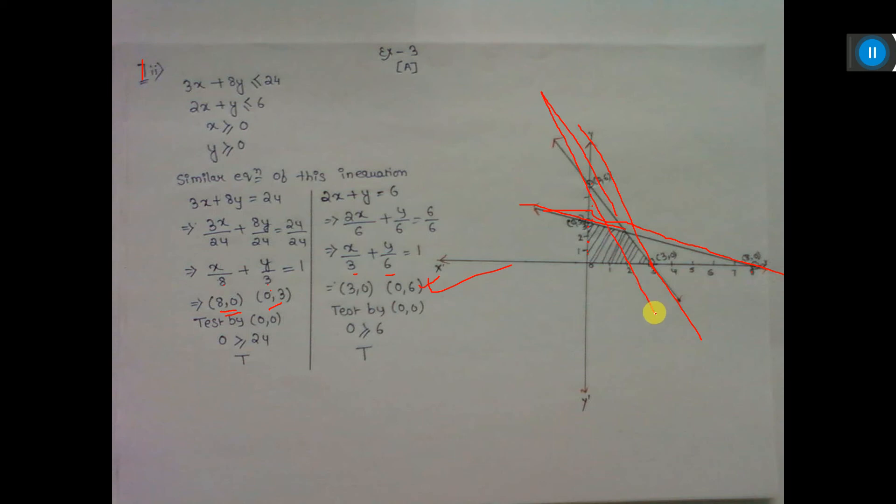Now see, these two lines are joined. Let's say they meet at P. Give names: O, A, P, B—any names you can give. So we have to write here OAPB. OAPB is the feasible region.